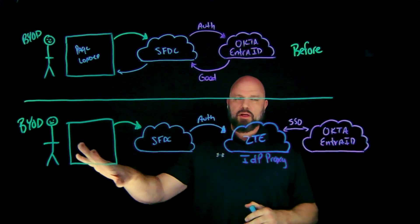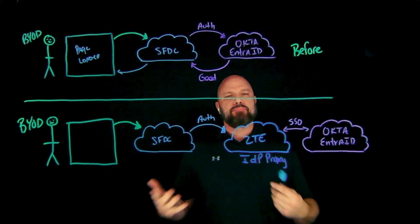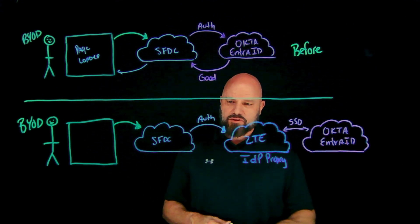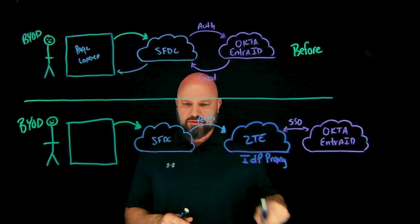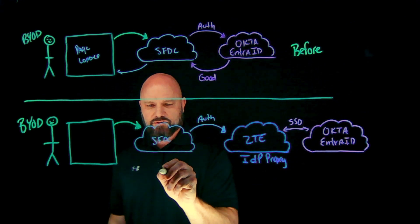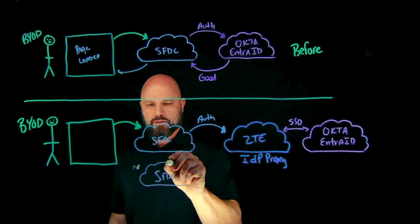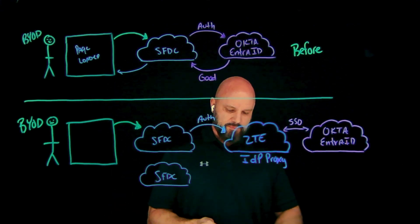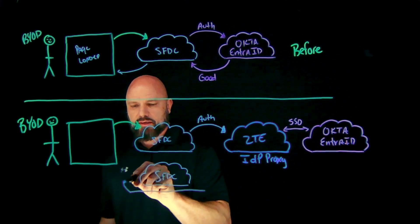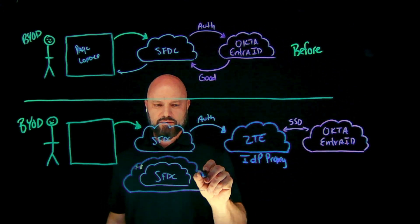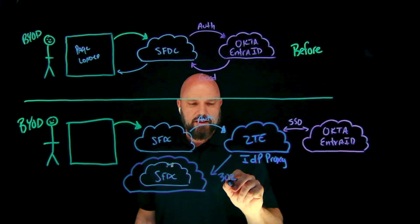I could straight up just block the user and tell them they can't log in from there, even though they have valid credentials — but again, that breaks collaboration. So instead, I'm going to respond with an isolation proxy. The user is still going to be able to get to Salesforce.com, but I'm going to wrap it in Zscaler Browser Isolation, so the ability to copy, paste, upload, and download will be restricted. This is what we call the old 302 redirect — isolation proxy.